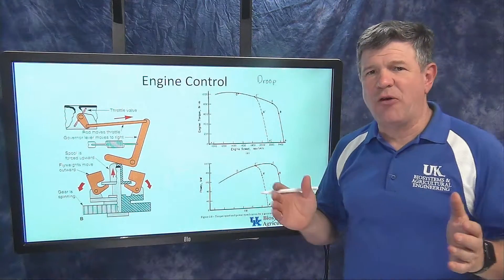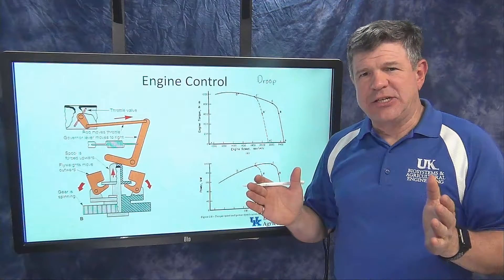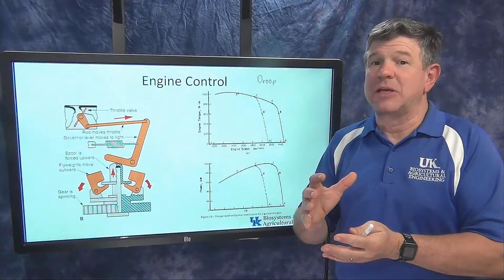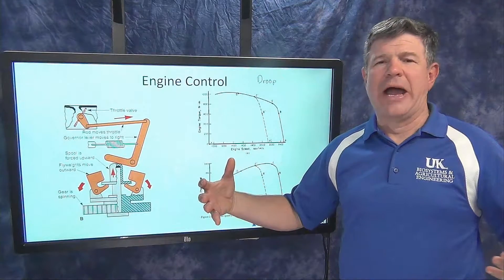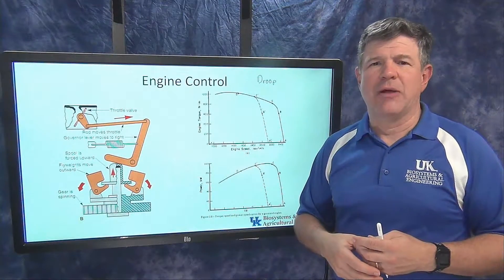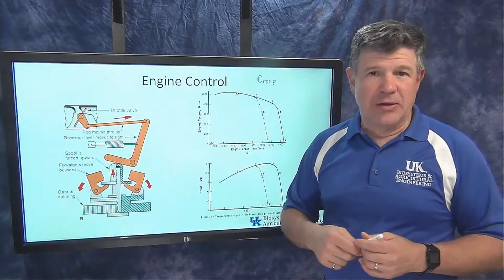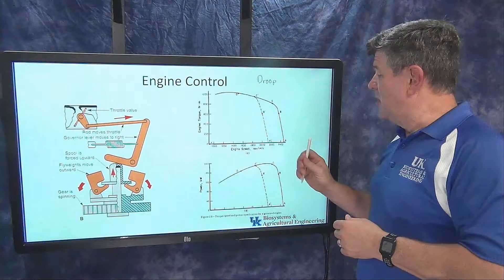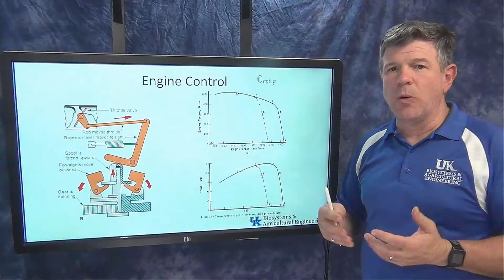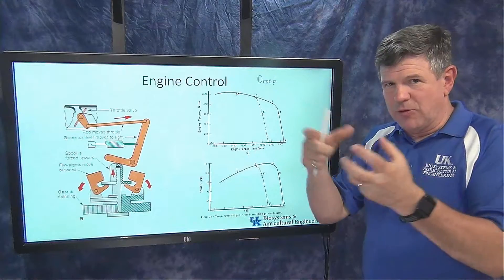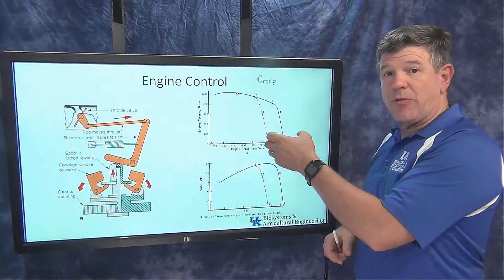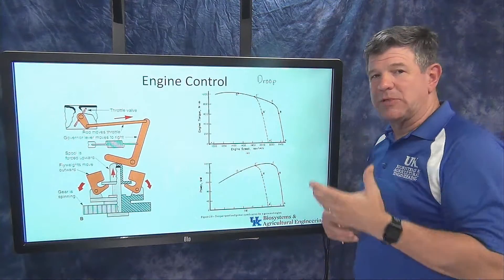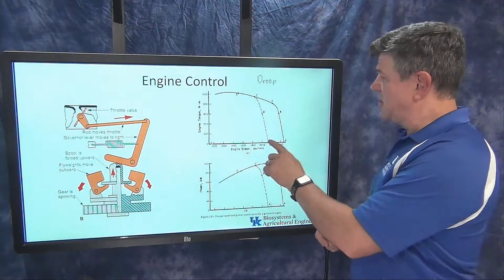The governor droop is how much speed change there is from when the governor is completely closed down — as slow as it can go with basically no power demand on the engine — to where it is wide open, where the governor can't do anymore and the engine's torque control takes over. It's how much the speed changes as the engine goes from maximum speed with no load, where the throttle plate or fuel flow is closed, to where the throttle opens all the way to the point where that's all the governor can do.